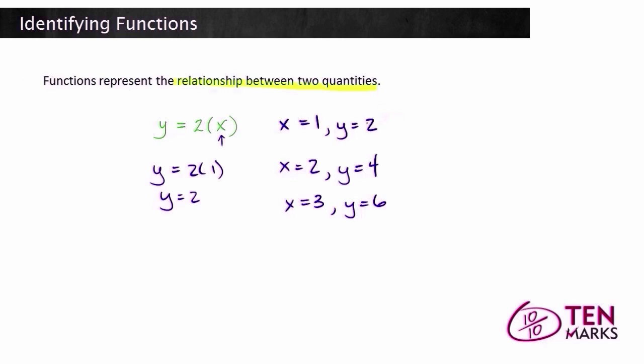So for example, what if you had the situation where when x equals 1, y could equal positive 2 or negative 2. Now this doesn't represent the function I just wrote over here. This is just a hypothetical. In this case, this does not represent a function because when x equals 1, there are two different outputs. So remember, a function must have a unique output for every input.